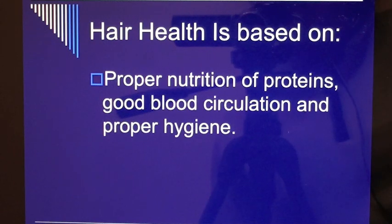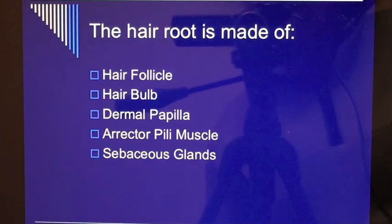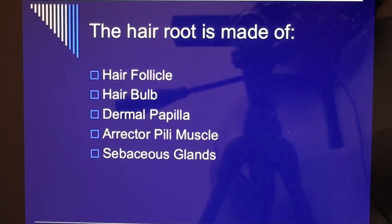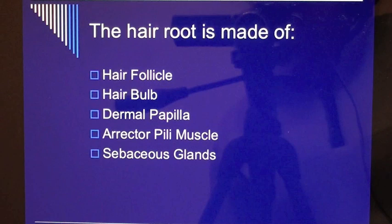The hair root is made of the hair follicle, hair bulb, dermal papilla, erector pili muscle, and sebaceous glands.